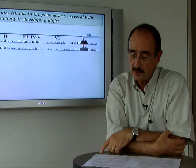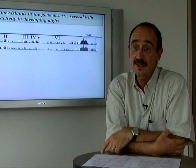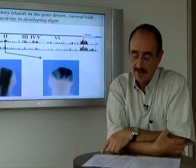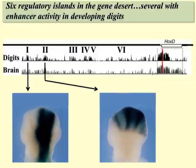Such marks include monomethyl K4 or the acetylation of K27. In addition, at least four such sequences can drive expression of a reporter gene in digits when introduced into a transgenic animal, as shown here for two cases.